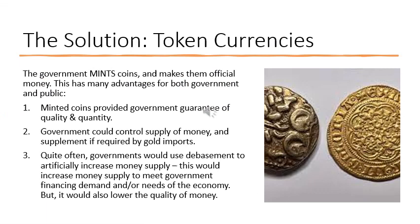Throughout history, people have attempted to find ways to expand the money stock beyond the available supply of gold. One of the standard ways to do so is to use token currencies, where you take gold and mint it — put government stamps on it. This has advantages because minted coins guarantee the quality and quantity of gold and make it easy to use for the public. The government can also control the supply of money by minting less or more according to the needs of the economy. If there is insufficient gold, the government can use what is called debasement — the token gold in the coin represents the value of much more gold and can be exchanged for that gold at government treasuries. The actual value of the coin is less than the value of the gold it represents.